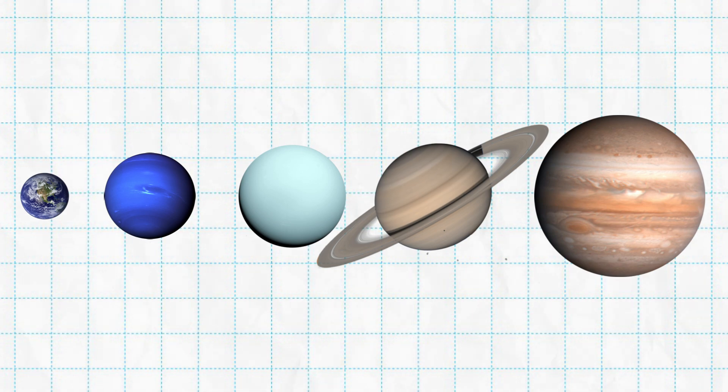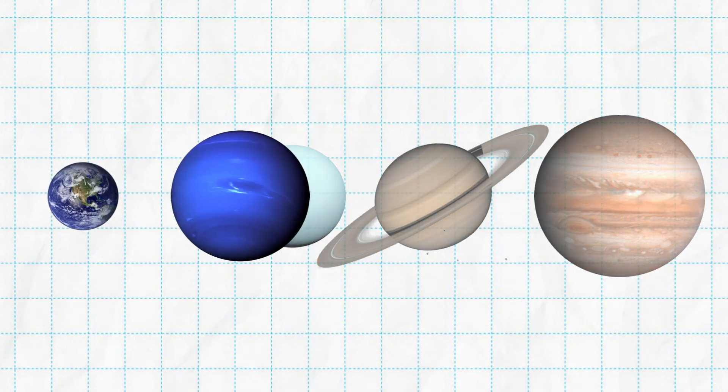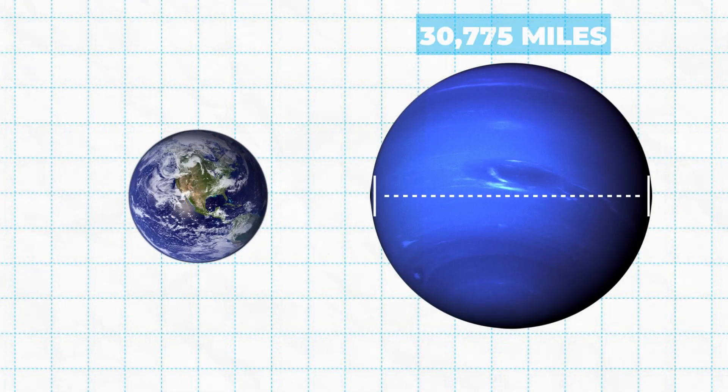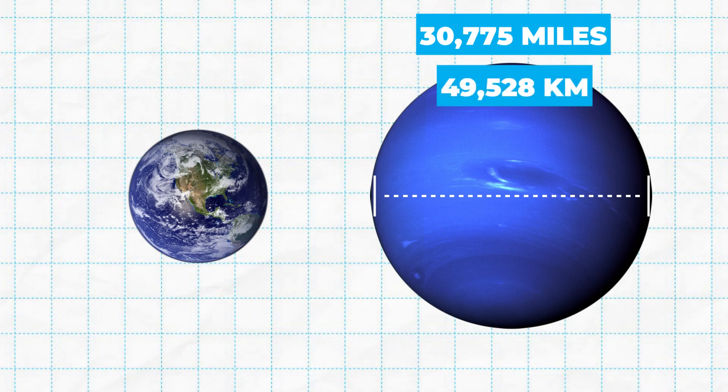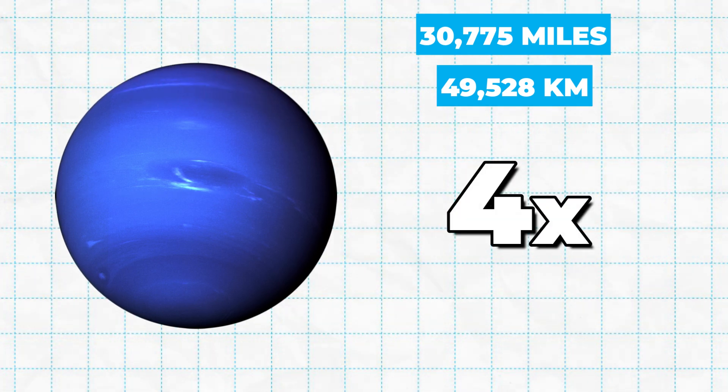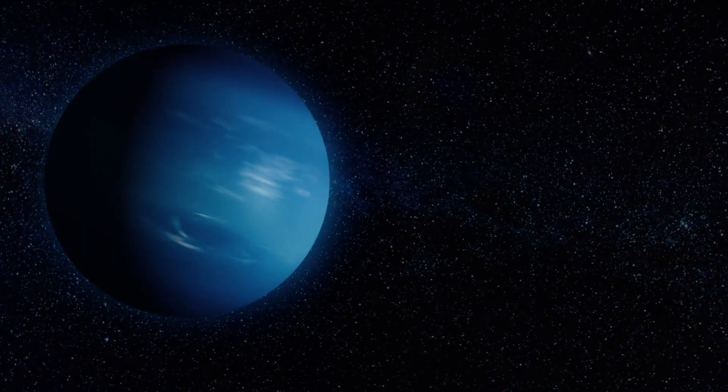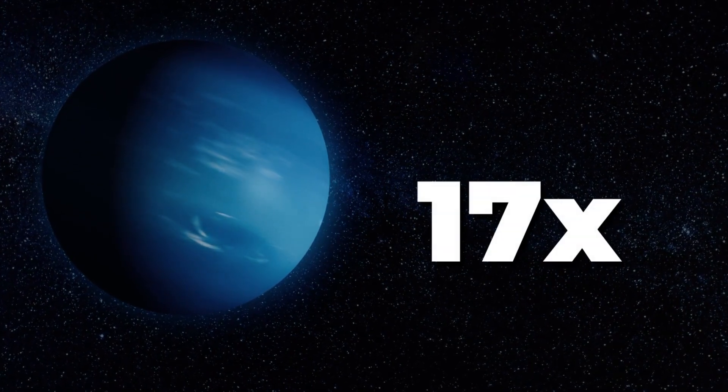Considered the fourth largest planet in our solar system, with an equatorial diameter of 30,775 miles, or 49,528 kilometers, Neptune dwarfs Earth, being about four times wider. On top of that, Neptune has a mass 17 times that of Earth.